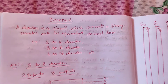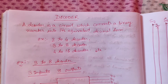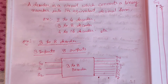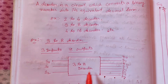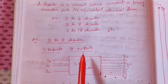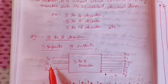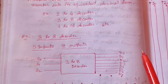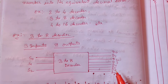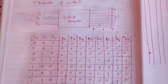We will take the example of a 3-to-8 decoder. It has 3 inputs and 8 output lines. The 3 inputs are S0, S1, S2, and the output lines are D0, D1, D2, D3, D4 up to D7.